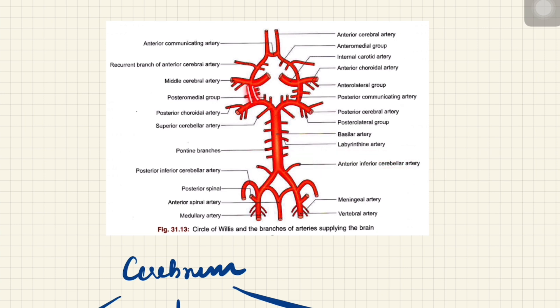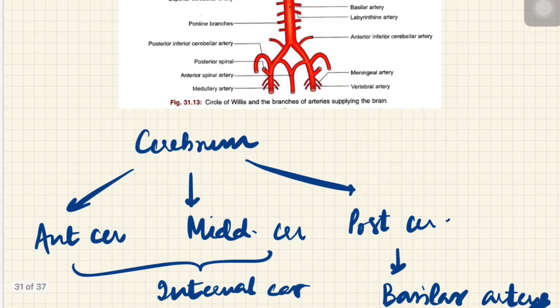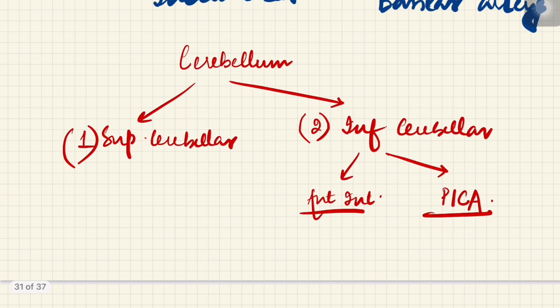The posterior communicating artery communicates the middle cerebral artery with the posterior cerebral artery, and then the anterior communicating artery communicates the two anterior cerebral arteries. So this is the gross appearance of the Circle of Willis. Now let's talk about a few main arteries in detail.